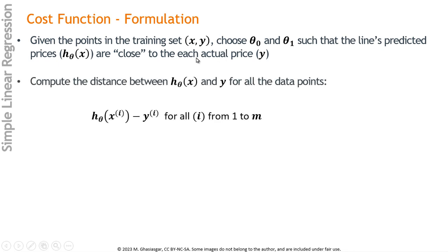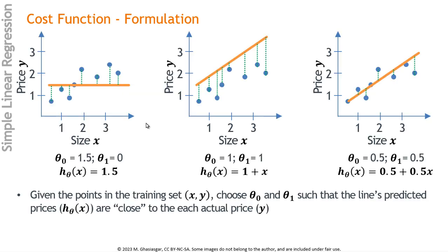We want to compute the distance between H(theta) of X and Y for all the data points. We compute H(theta)(x_i) minus y_i — that's the difference. Going back to the previous slide, H(theta) would be the orange value and Y would be the blue value, so it would be orange minus blue. In one case the difference is positive, and in another case orange minus blue would be negative.